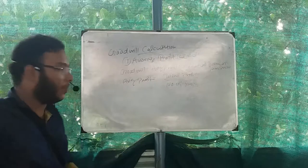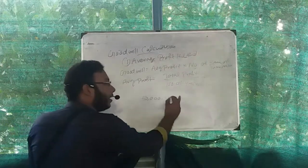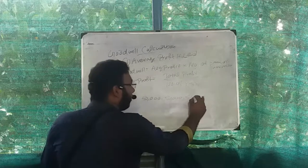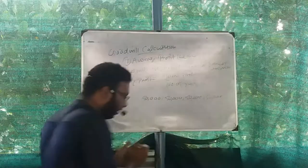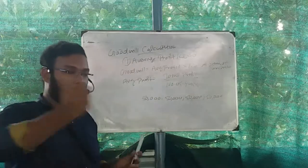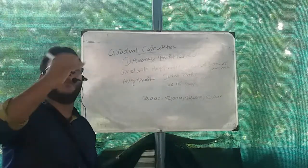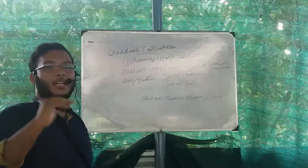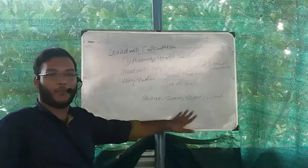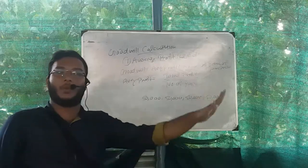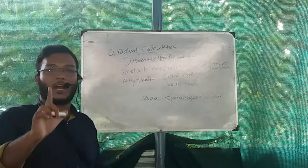I have to take the 4 years of profit. For example, I have to take the 4 years of profit. That means we will calculate the 4 years of profit and then find the average profit.